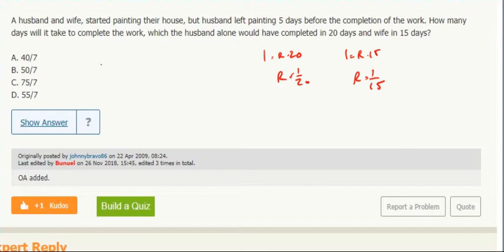But we do know the second half after the husband left, the wife worked alone for five days. So that means she did a rate of 1/15 for five days. That means she did one-third of the work.